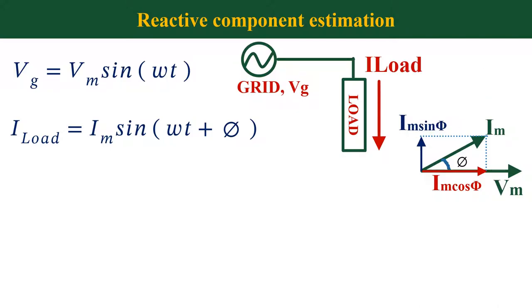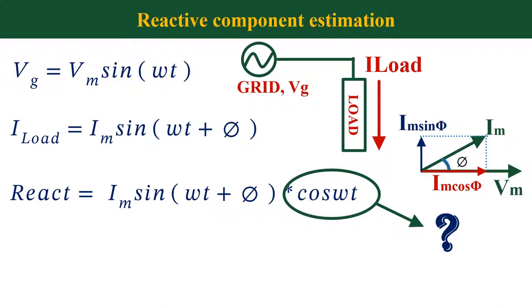For that, first we need to multiply the current with cos omega t, then we get reactive component is equal to Im sin omega t plus phi into cos omega t. Now you will be wondering from where I got this cos omega t term. This term I obtained from phase locked loop. From PLL, we get one active component and one reactive component. This cos omega t that I used here is basically the reactive component.